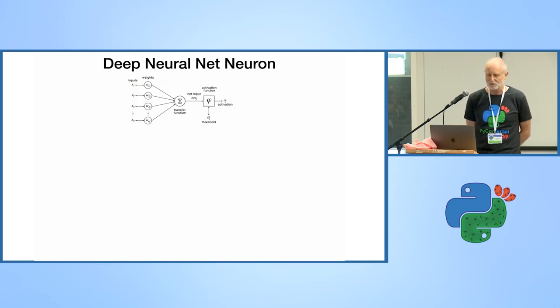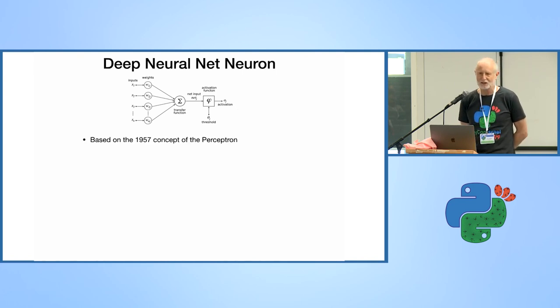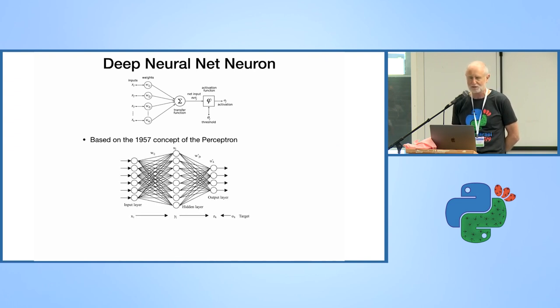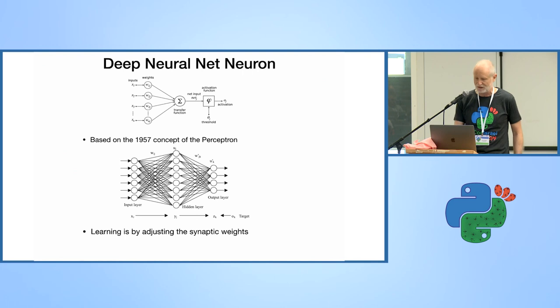Let's go back to deep neural net neurons. They're fairly simple. You have the synapses that have different weights. These are summed in the neuron body. They go through an activation function, normally non-linear, which gives you your output. This is based on a really naive understanding of neurons around 1957. They didn't have much success until recently when people started connecting them up into deep neural nets with lots of hidden layers. The thing to take away is that learning is by adjusting the synaptic weights.